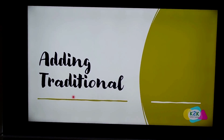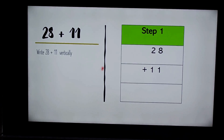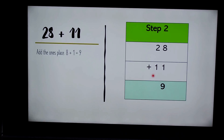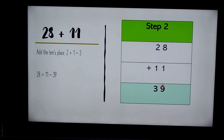Next we're going to be adding with the traditional algorithm. The first equation is 28 plus 11. We write 28 plus 11 vertically with the biggest numbers first. Then we add the ones place first — eight plus one equals nine — and then the tens place — two plus one equals three. So 28 plus 11 equals 39.